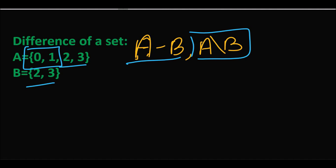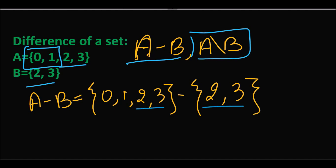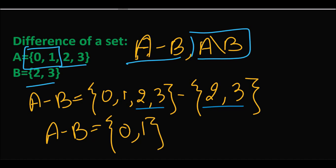اب ہم difference find کرنے جا رہے ہیں۔ A minus B: set A میں elements ہیں {0, 1, 2, 3}، minus set B جس میں ہیں {2, 3}۔ جو elements دونوں میں same ہوتے ہیں وہ extract ہو جاتے ہیں اور remaining elements کو ہم use کرتے ہیں۔ تو A minus B equals to {0, 1}۔ اس کو ہم difference of the set کہتے ہیں۔